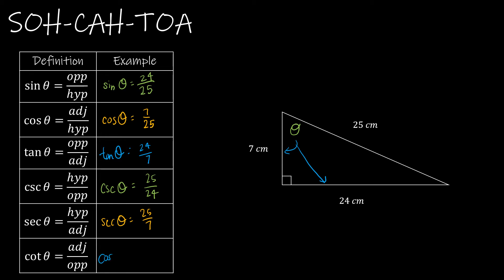And then cotangent theta, not cosine, cotangent theta, and that's going to be adjacent over opposite, which is 7 over 24.